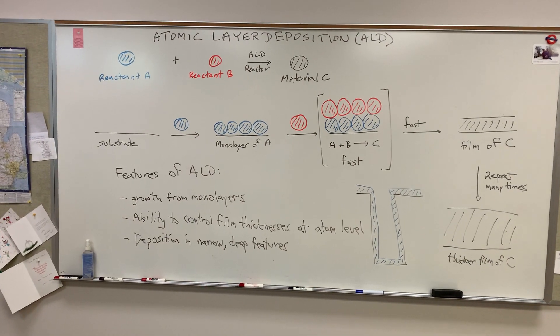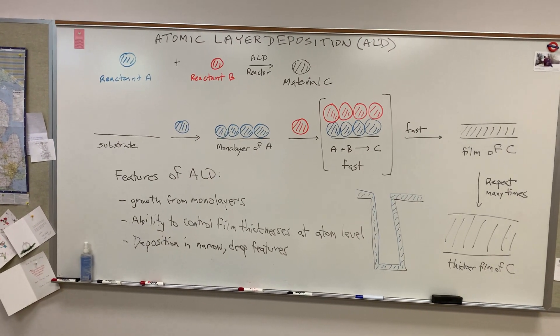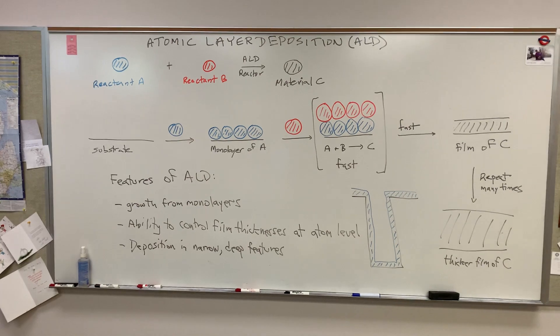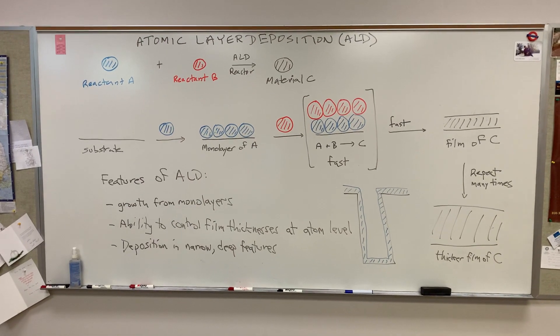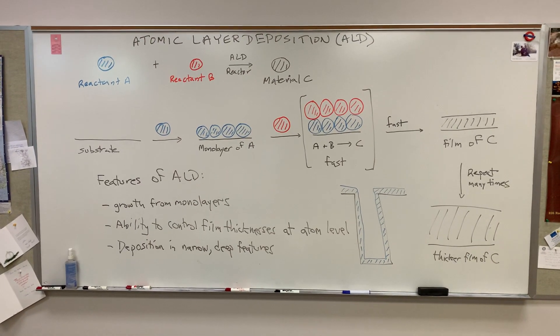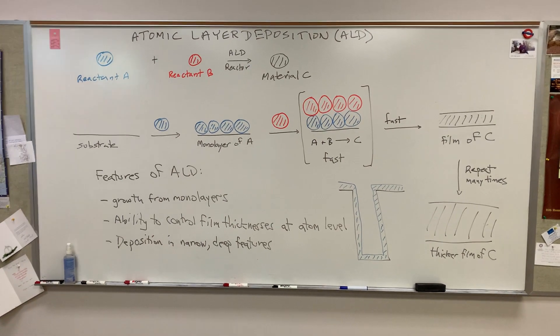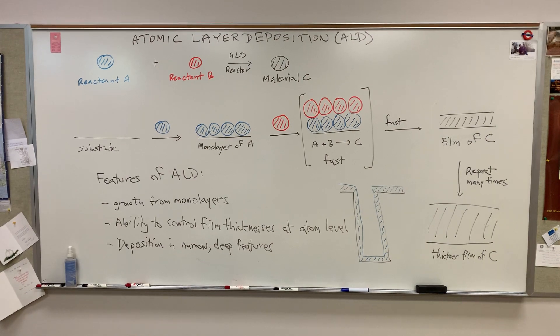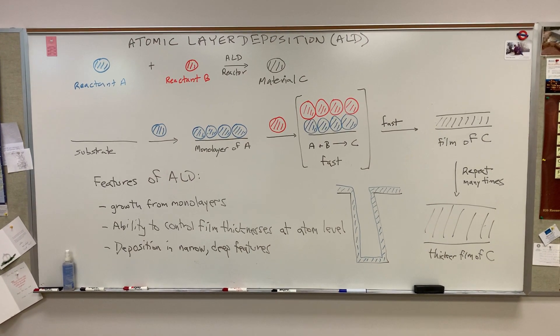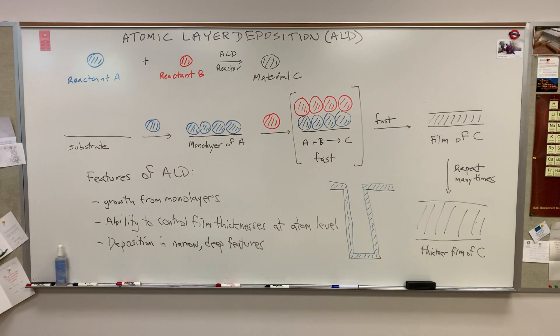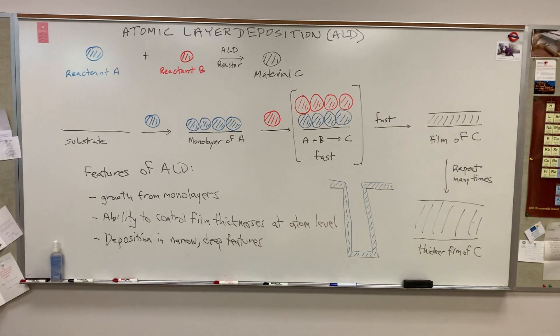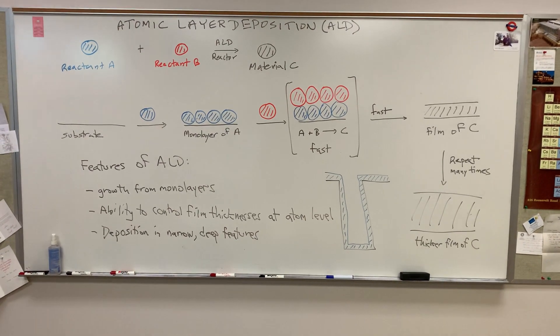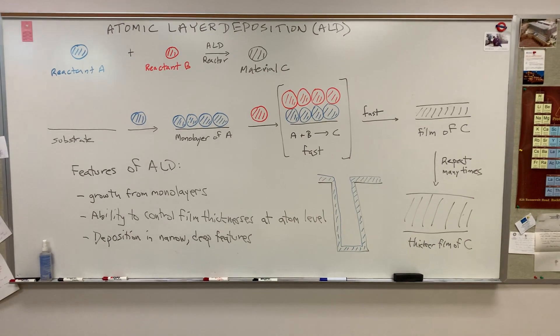Now some features of ALD: I've already explained the growth from monolayers, and this is called self-limited growth. And I'm not going to talk about the chemistry of self-limited growth, but it is controlled by chemistry. And the second feature is that we have the ability to control film thicknesses at the atom level. So if we wanted to make a film that had five layers of atoms in it, we could do that very precisely using ALD.